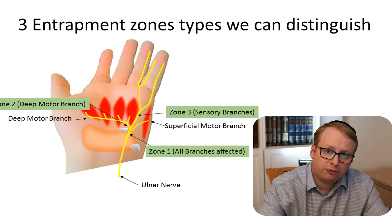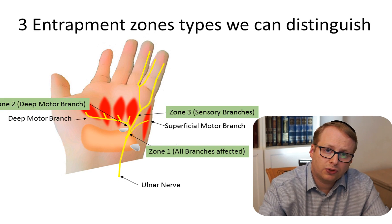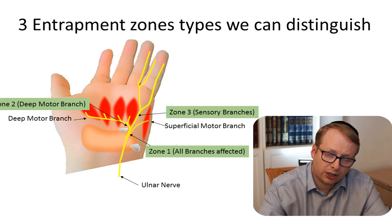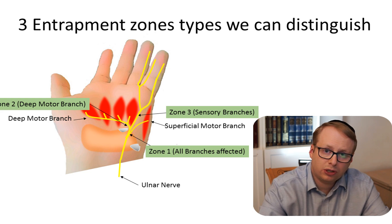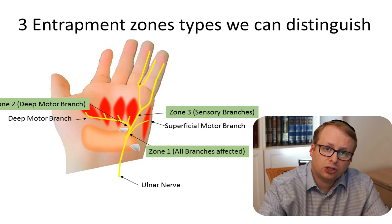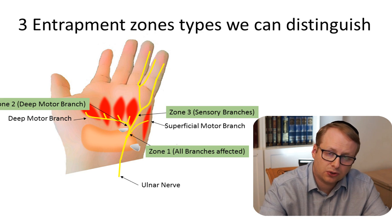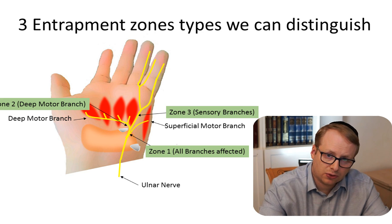Neurophysiology can actually be very useful to pinpoint the exact zone in which the nerve entrapment is occurring. In Zone 1, which is within Guyon's canal, all three branches of the ulnar nerve are affected. So we've got a reduction in the sensory response, and prolongation of the response to the FDIO muscle and also to the ADM muscle as well.